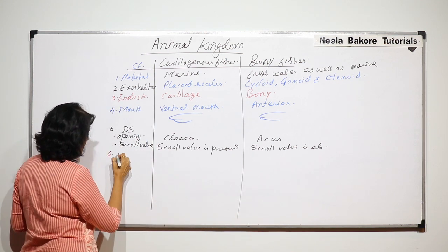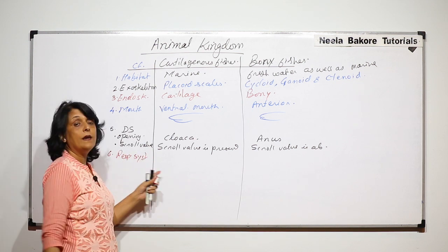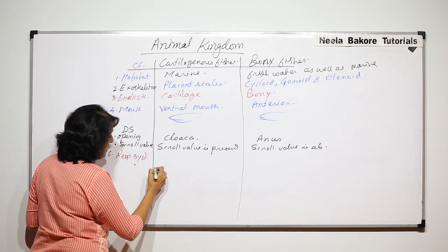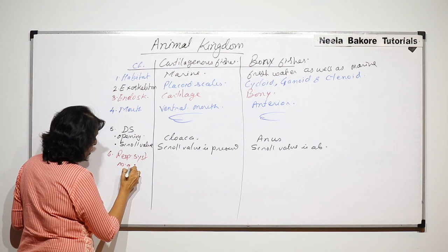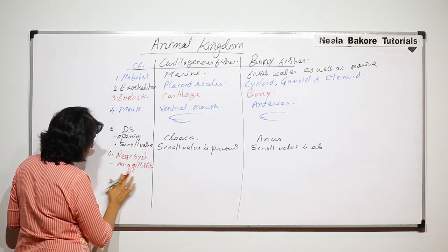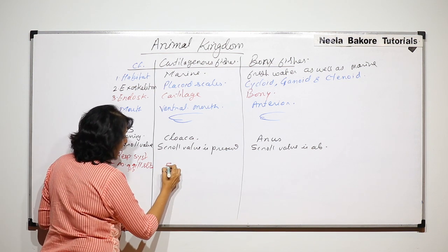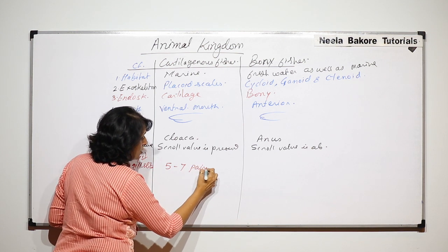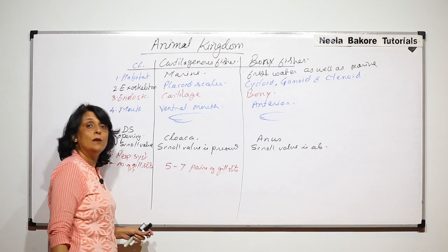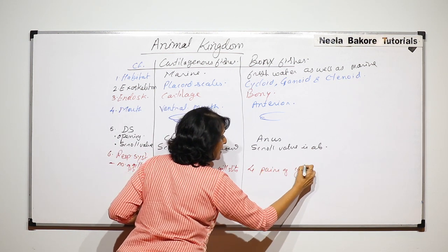Now let us come to the respiratory system. The first point of comparison is the number of gill slits. In the case of cartilaginous fishes there are 5 to 7 pairs of gill slits, whereas bony fishes have 4 pairs of gill slits.